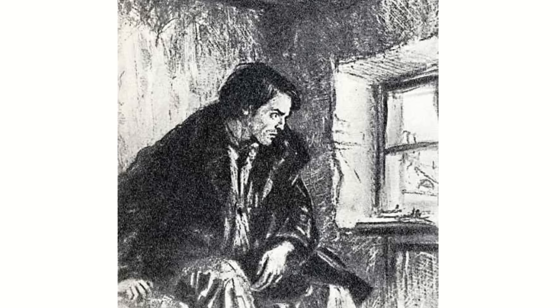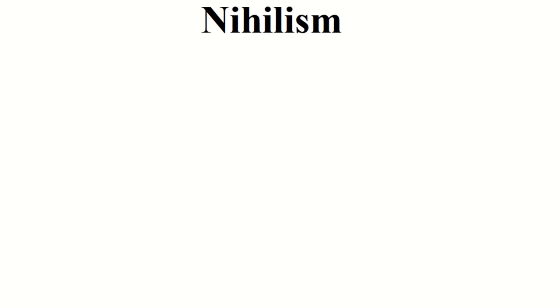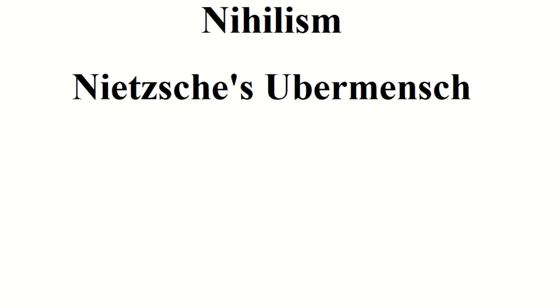Raskolnikov reasons and rationalizes and then plans to kill a horrible old lady and take her money and belongings. This book walks us through the moral rationalizing of committing this action as well as what could happen mentally, physically and spiritually when one engages in such dark activity. This book raises the philosophical themes around nihilism, the Nietzschean Übermensch, as well as moral philosophy on utilitarianism, the ontological ethics, religious ethics and natural law.